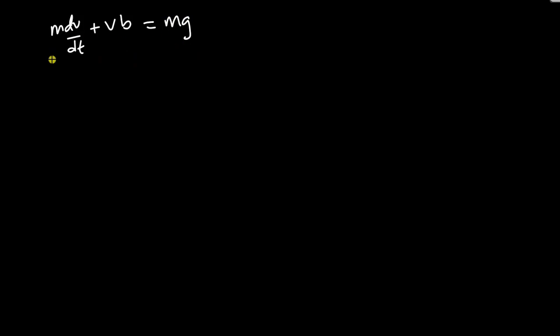This is a first-order linear differential equation, and I can actually write it in a better way. If I divide through by M, I have dv/dt plus B over M times V equals G. Of course, we can solve this by separating variables, but I'll prefer to use the integrating factor.